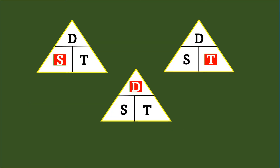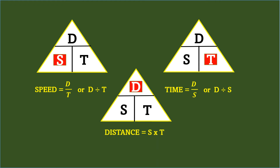Getting the distance, time, and speed can be very easy with the use of the triangle. In the triangle, D or distance is on top, while S or speed and T or time are beside each other below the D. With this, the formula for speed is distance divided by time, for time is distance divided by speed, and for distance is speed times time.